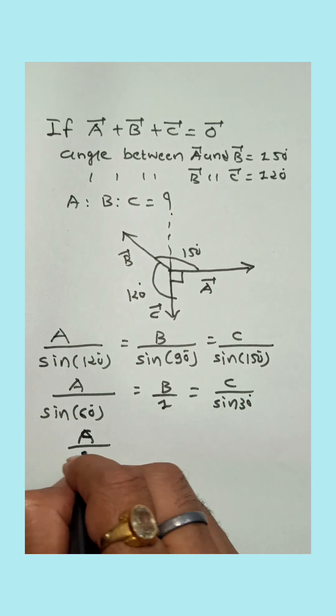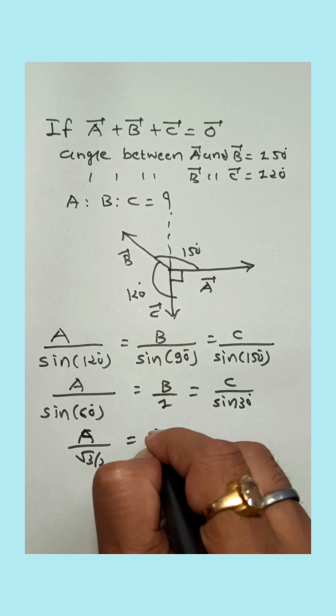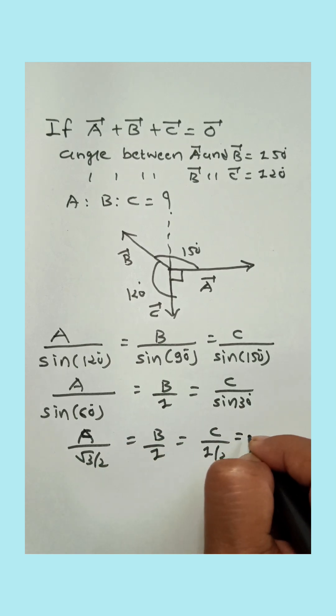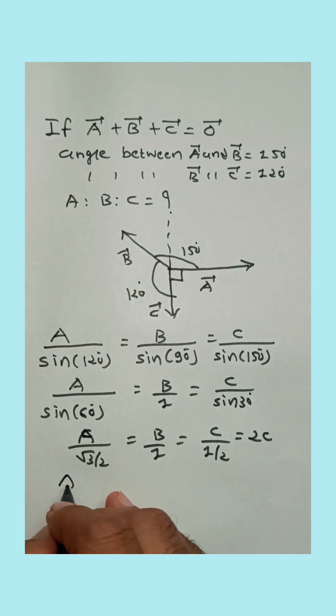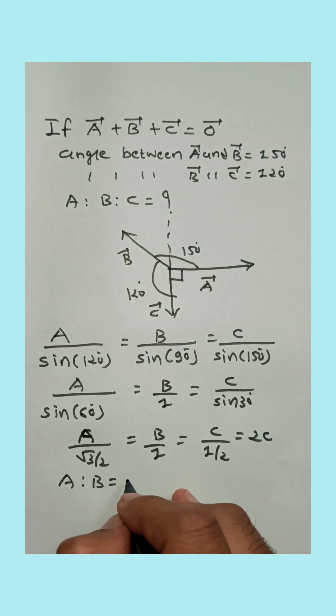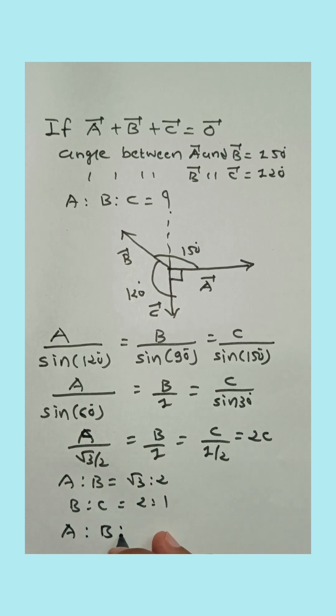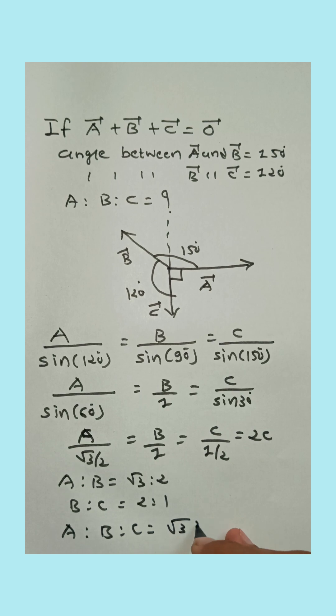So A upon root 3 by 2 is equal to B upon 1 is equal to C upon 1 by 2, or you can write 2C. So A is to B is equal to root 3 is to 2, and B is to C is equal to 2 is to 1. So A is to B is to C is equal to root 3 is to 2 is to 1.